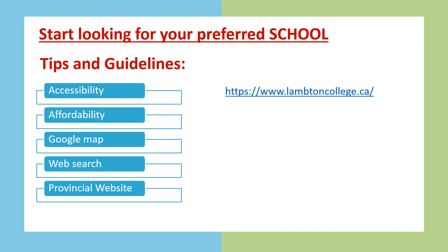Now you can start looking for your preferred school. Consider the following: accessibility — is it easier to ride the bus or public commute going to your school and or workplace; affordability — is the tuition fee affordable. Use Google Maps to find the location, and web search to look for the school. Each school has an official website so you can check the details of the program you prefer. You can also check the provincial website — each province in Canada has an official website listing all services within their territory.